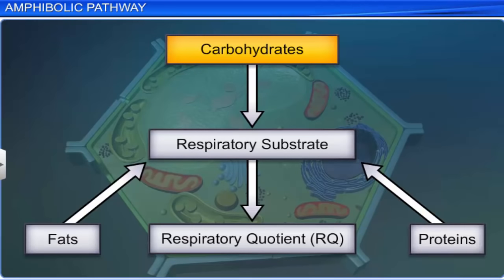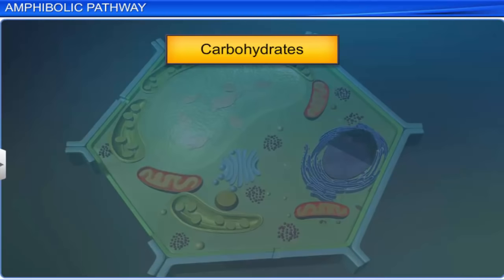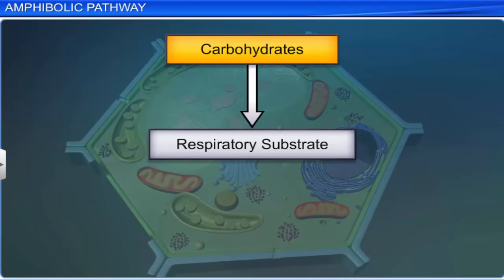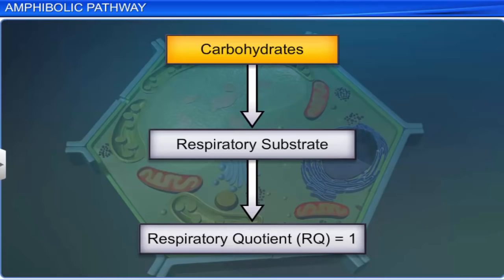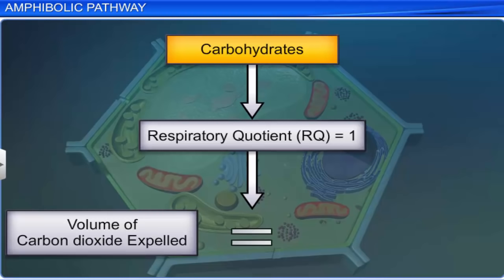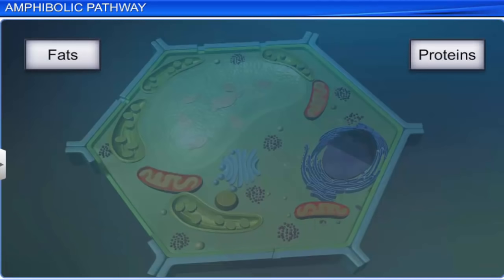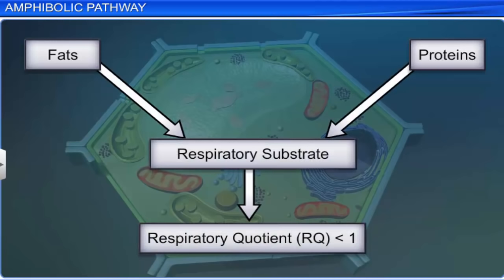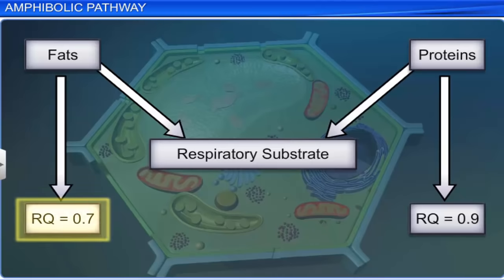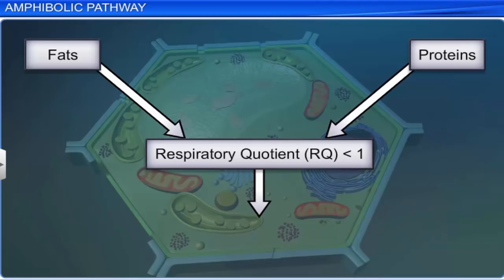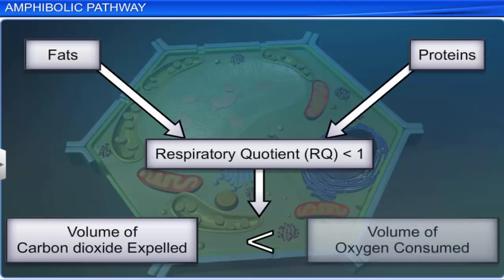As plants use more than one substrate for respiration, RQ depends on the respiratory substrate used. When carbohydrates are used as the respiratory substrate, the RQ value is 1, which means the volume of carbon dioxide expelled equals the volume of oxygen consumed. But when fats or proteins are used as the respiratory substrate, the RQ value is less than 1 — 0.7 for fats and 0.9 for proteins — which means the volume of carbon dioxide expelled is less than the volume of oxygen consumed.